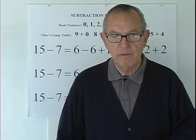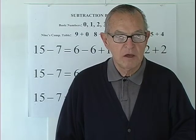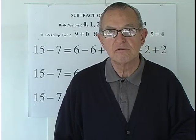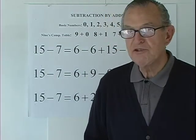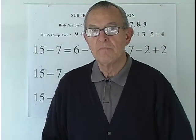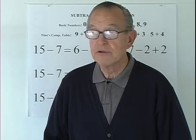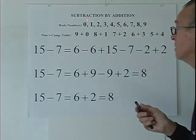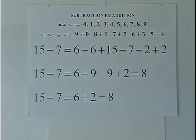Before we can develop our algorithm, we have to define certain things. In our base ten numeration, there are ten basic numbers. They are 0, 1, 2, 3, 4, 5, 6, 7, 8, 9. We have these ten numbers, and we can use one or more of these ten numbers to write any other number.